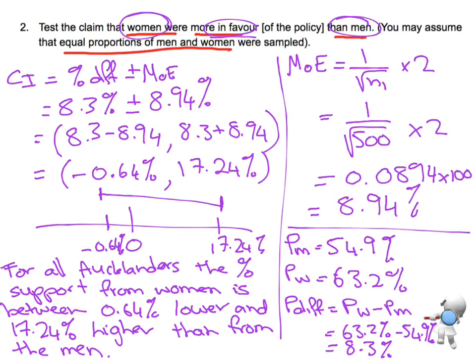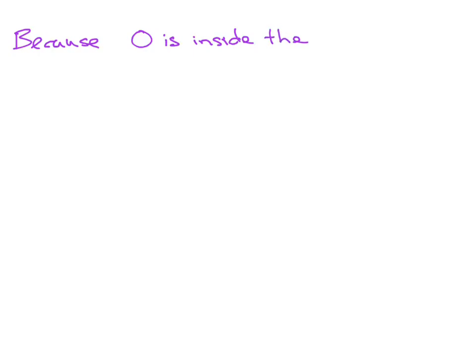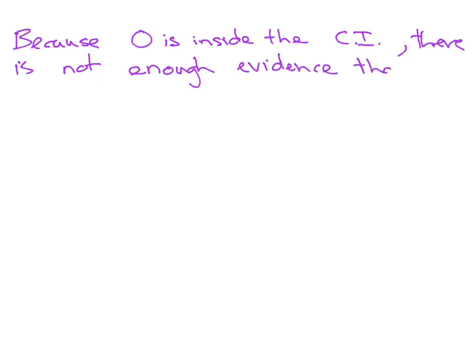The claim is that women are more in favour than men. Because the confidence interval includes 0, that means I do not have enough evidence that more women are in favour. Because 0 is inside the confidence interval, there is not enough evidence that more women are in support compared with men.